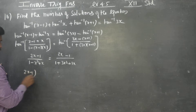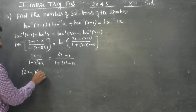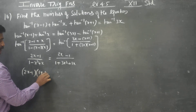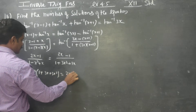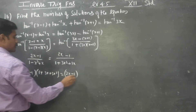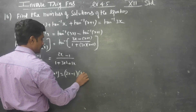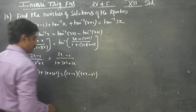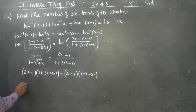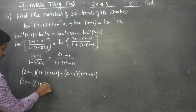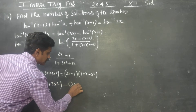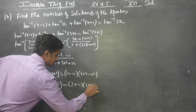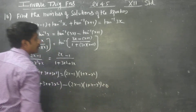Cross-multiplying: (2x minus 1) times (1 plus 3x plus 3x squared) is equal to (2x minus 1) times (1 plus x minus x squared), and setting everything equal to zero.